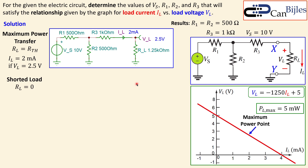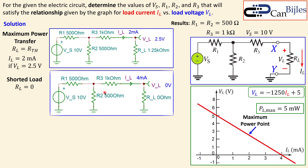If we now short the load — another extreme case — the simulation produces four milliamps in the load branch and zero load voltage. This matches the graph: when load voltage is zero, load current is four milliamps. We have proven this point comes from this circuit.